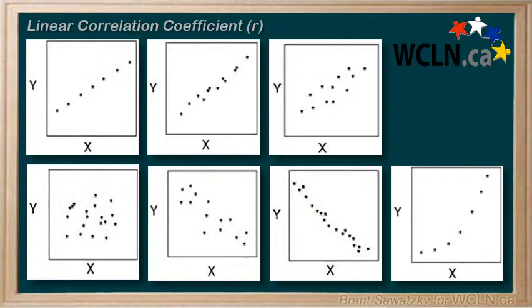So how can we describe to someone how well our data aligns with our best fit line? We can use a correlation coefficient, typically shown as R, to describe how closely a best fit line represents the given data.